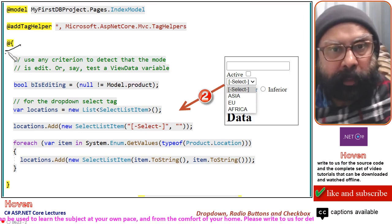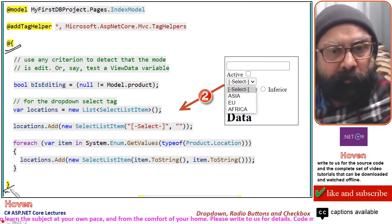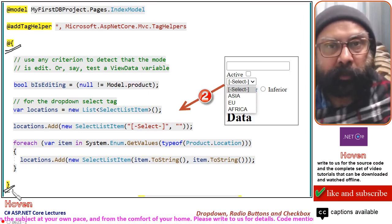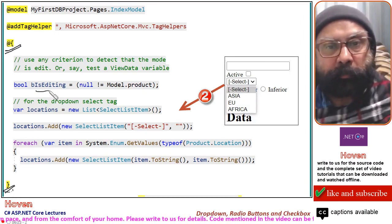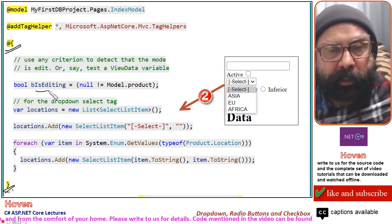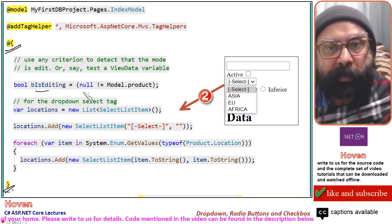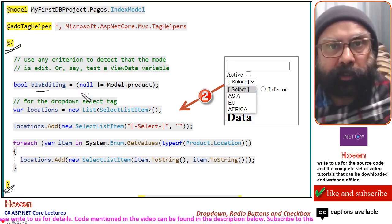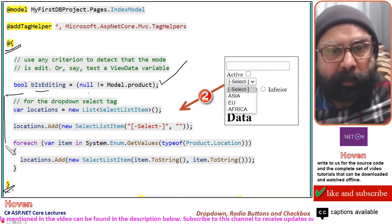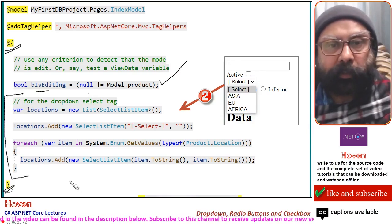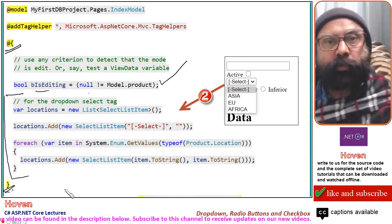We also used a Razor code block for creating a boolean variable called bIsEditing. This variable was used to test whether the page is in edit mode or in data entry mode. This has been done previously. Today we are going to add the remaining part of the code.